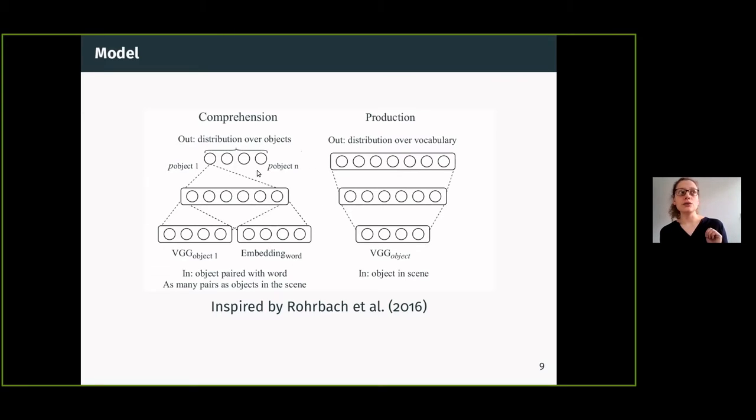In practice, what we use to train the model is the cross entropy between this output distribution here and the one-hot encoding of the word we input in the first thing, and we backpropagate through this whole thing. During training, we don't input just one object but we input a weighted sum of all the objects in the scene, so we treat these values here as attention.